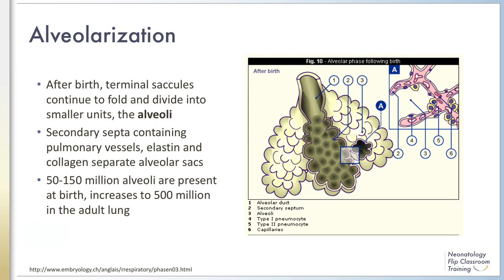After birth, the terminal saccules continue to fold and divide into smaller units, the alveoli. Secondary septa containing pulmonary vessels, elastin, and collagen separate the alveolar sacs. Interstitial capillaries in the septum are exposed to two alveoli to improve efficiency of gas exchange. Alveolarization continues through childhood. At the time of birth, 50 to 150 million alveoli are present, increasing to 500 million found in the adult lungs.